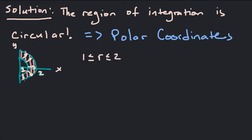Our theta values are going to go from negative π/2 to positive π/2. One nice continuous region for theta would be negative π/2 to π/2 — we could use 3π/2 to 5π/2, but that's less preferable. So we'll use negative π/2 to π/2 for theta.